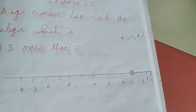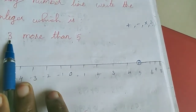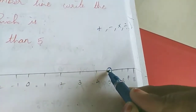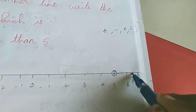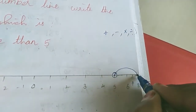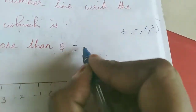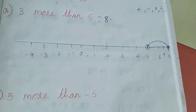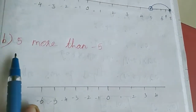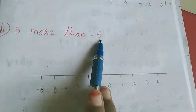3 more than 5 — so we start at 5 and take 3 steps to the right: 1, 2, 3. So the answer is 8. Now I am going to sum B.